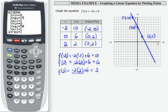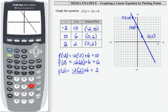So the way I'm going to activate that window is I'm going to press zoom. And zoom 6 is the standard. So I'm going to press 6. And then that's going to change my window to this negative 10 to 10.